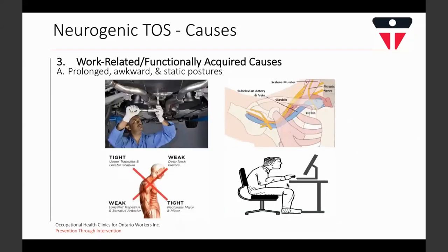Elevating the arms for extended periods, as in overhead work, is thought to involve direct impingement and traction of structures. Over time, muscular adaptations to extensive overhead arm use may also result in growth of muscles surrounding the thoracic outlet such as the scalene muscles, worsening compression. Abduction of the arm causes the neurovascular bundle to be stretched underneath the coracoid process, almost like a belt stretched around a pulley. Chronic adoption of thoracic kyphosis, rounded shoulders, and forward head posture can lead to biomechanical changes that diminish space in the thoracic outlet compartments.